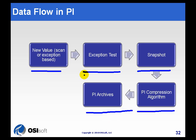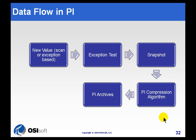We like to describe this as: the exception test is essentially a way to filter out line noise, and then the compression test is a way to optimize how we store data on disk so that we simply store the peaks and valleys. If there's something on a vector that's constant — it keeps increasing but at a constant rate — there's no point to keep storing a value over and over again. It's better to just store the peaks and valleys.